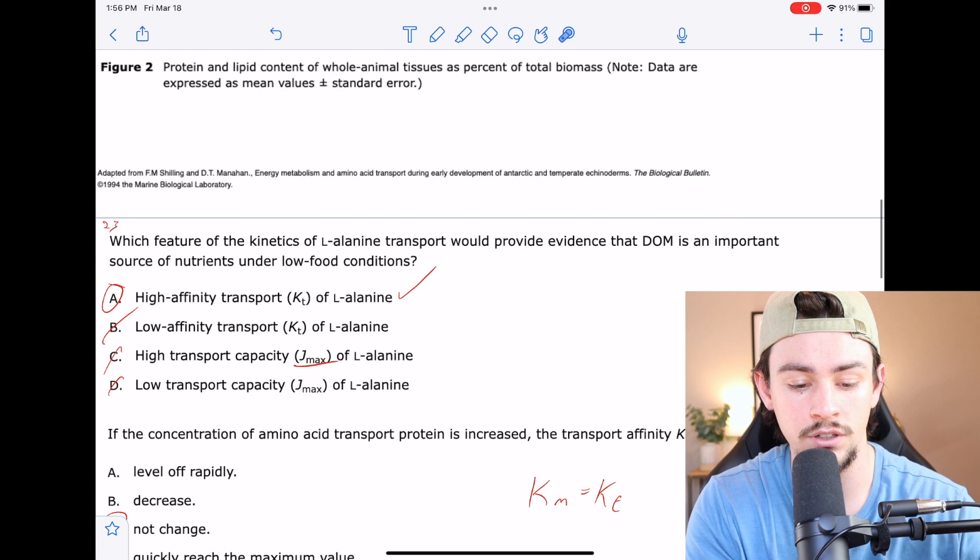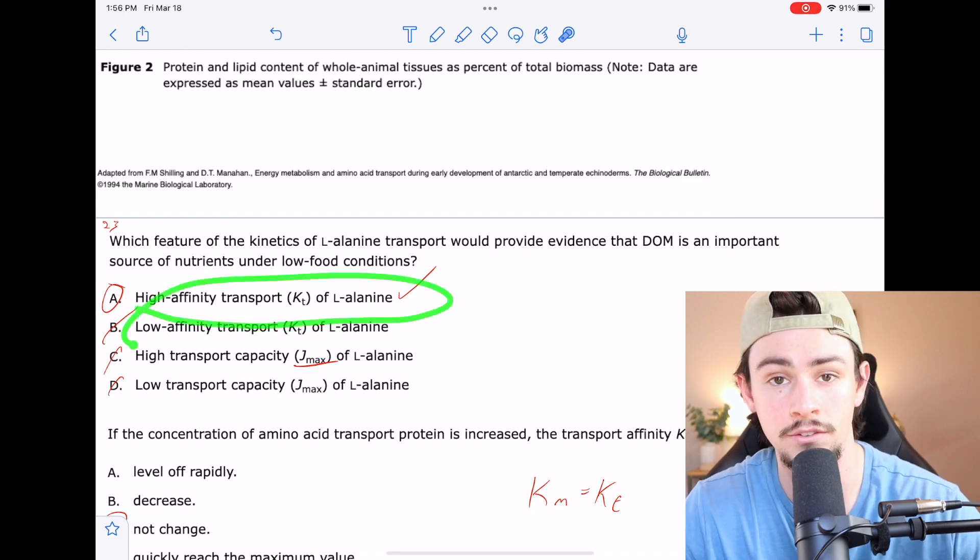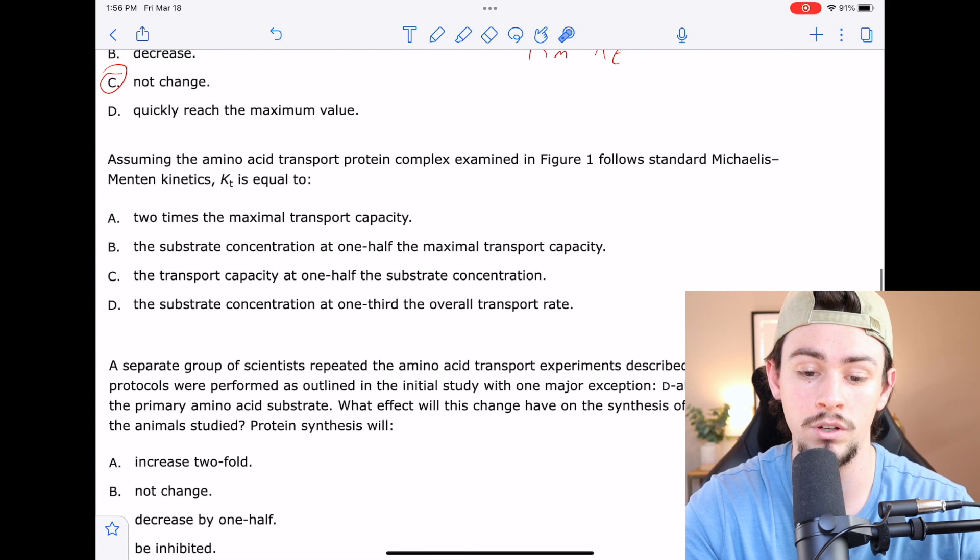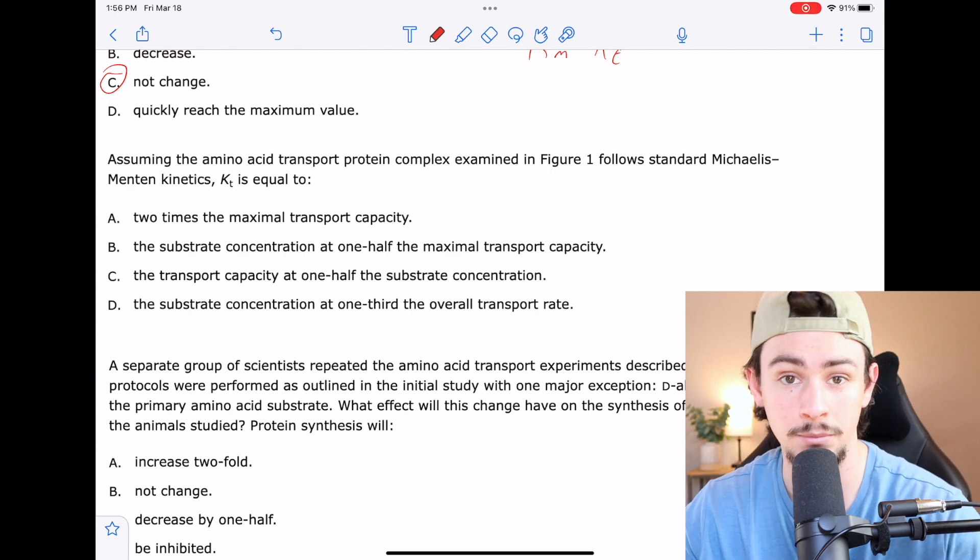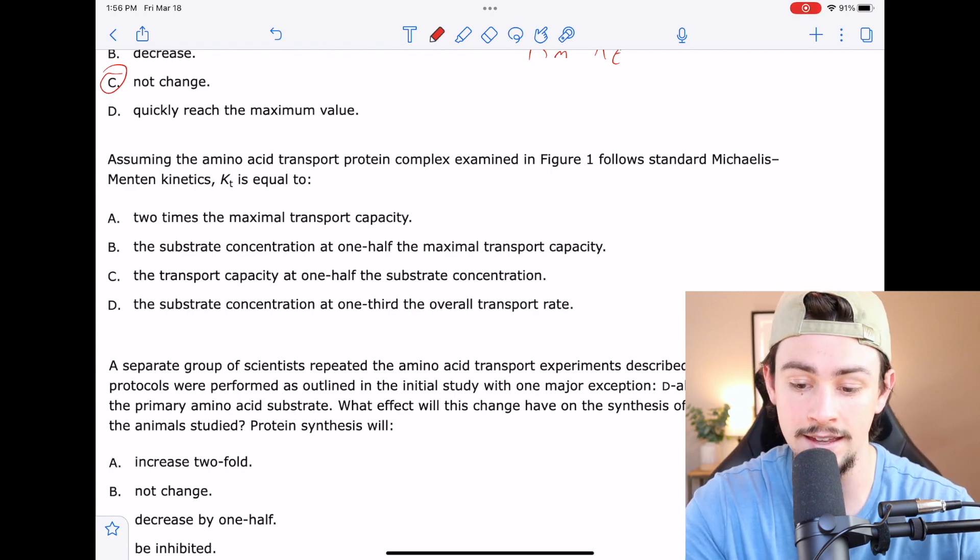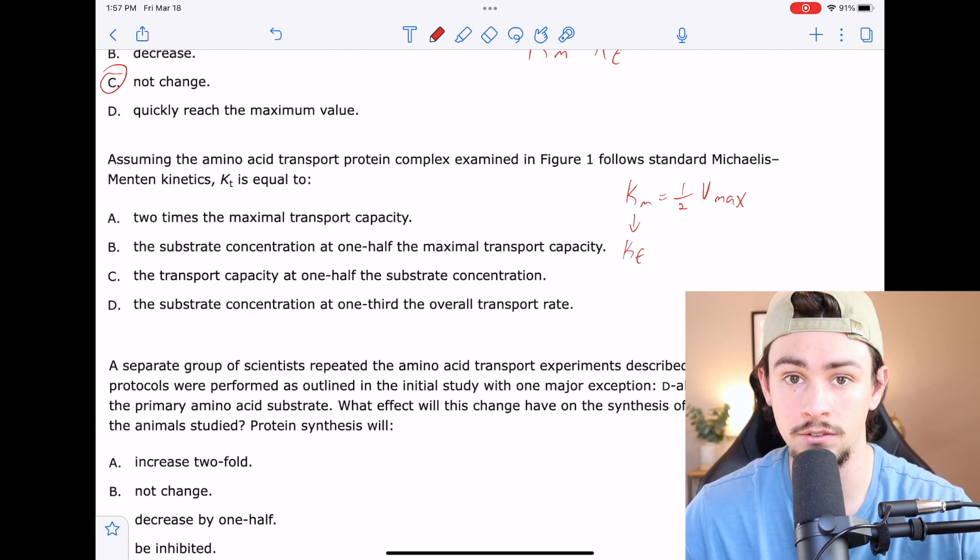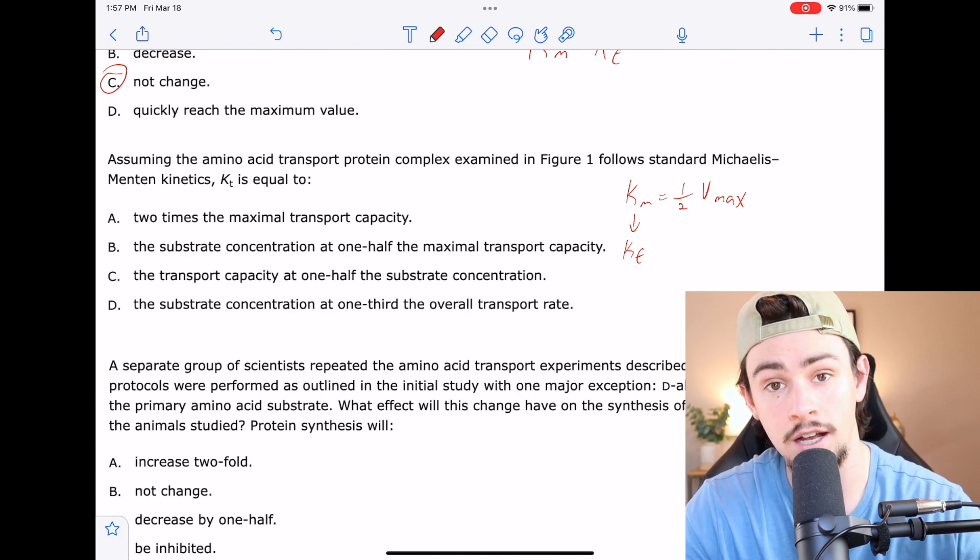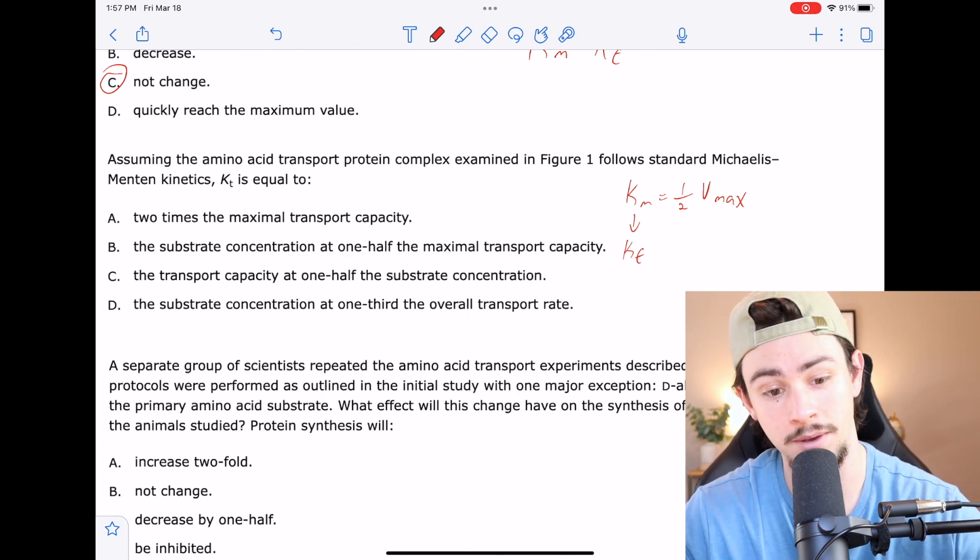Luckily, however, they've already asked us a question of it and kind of explained what it is referring to. And we have the correlation that if it's following standard Michaelis-Menten kinetics, then KM equals one half Vmax. And we've already made that connection between KM and KT. So we're looking for something that's going to be synonymous with substrate concentration at one half of Vmax.